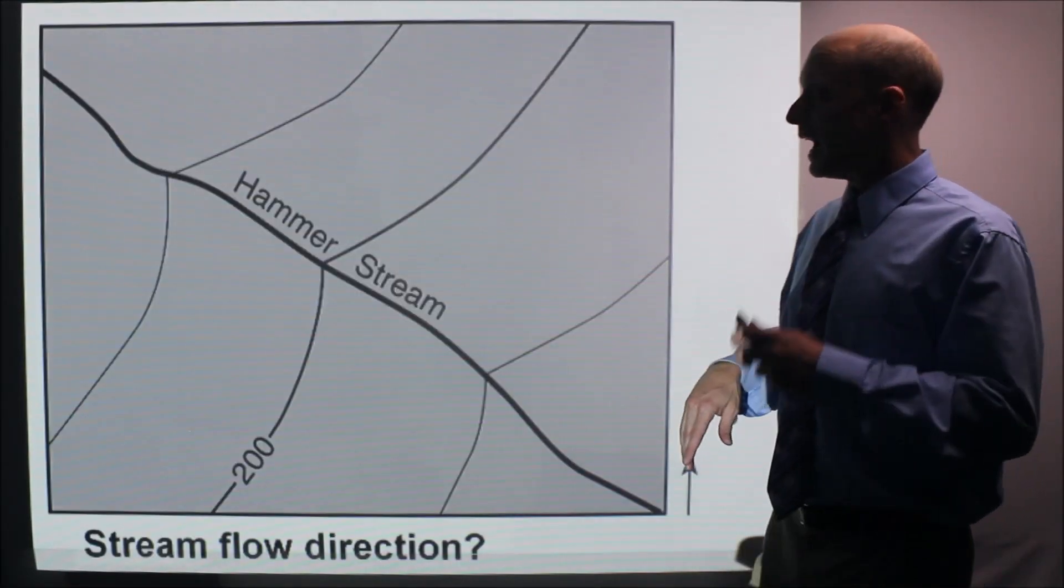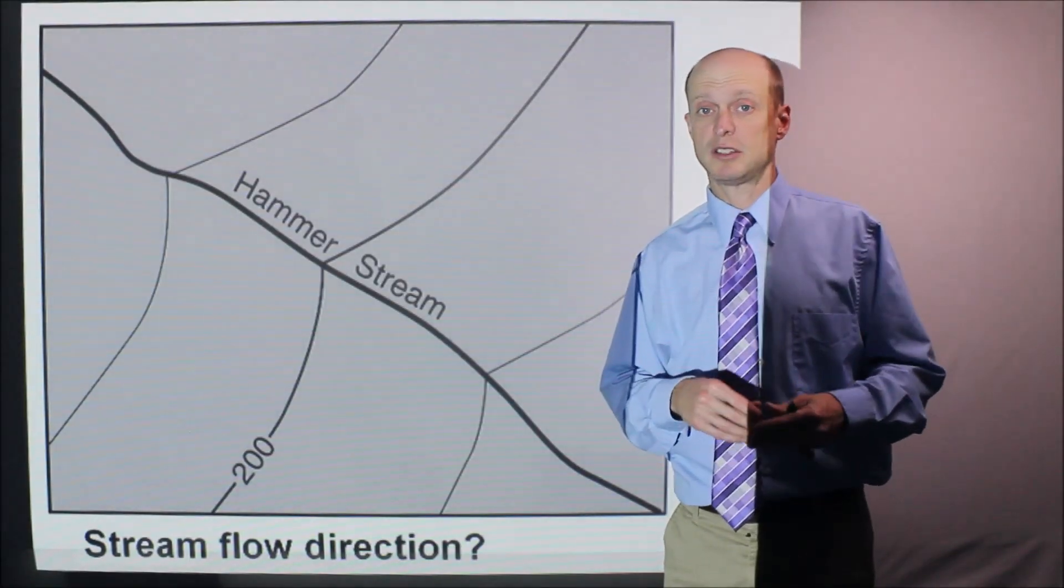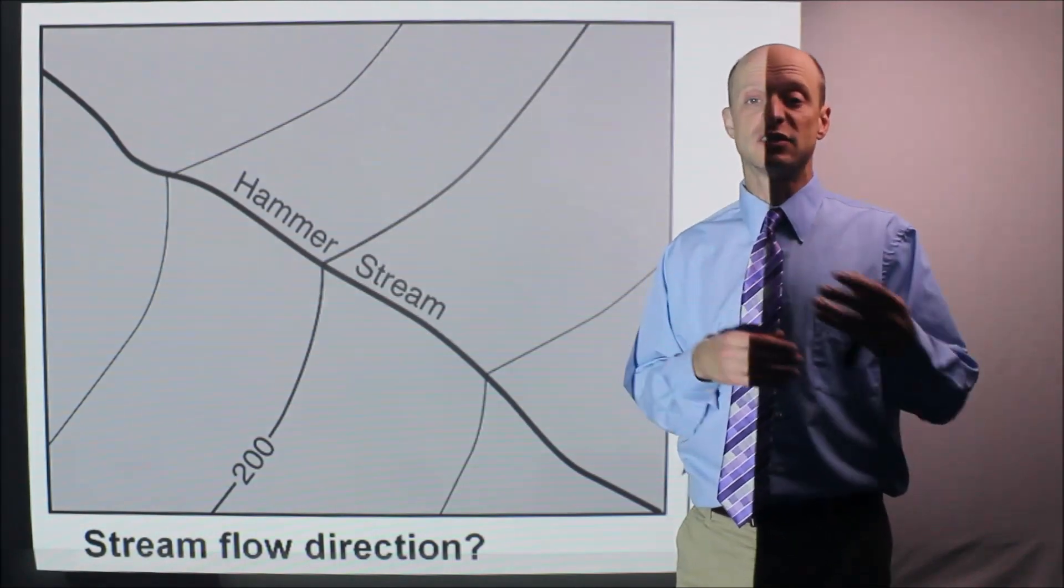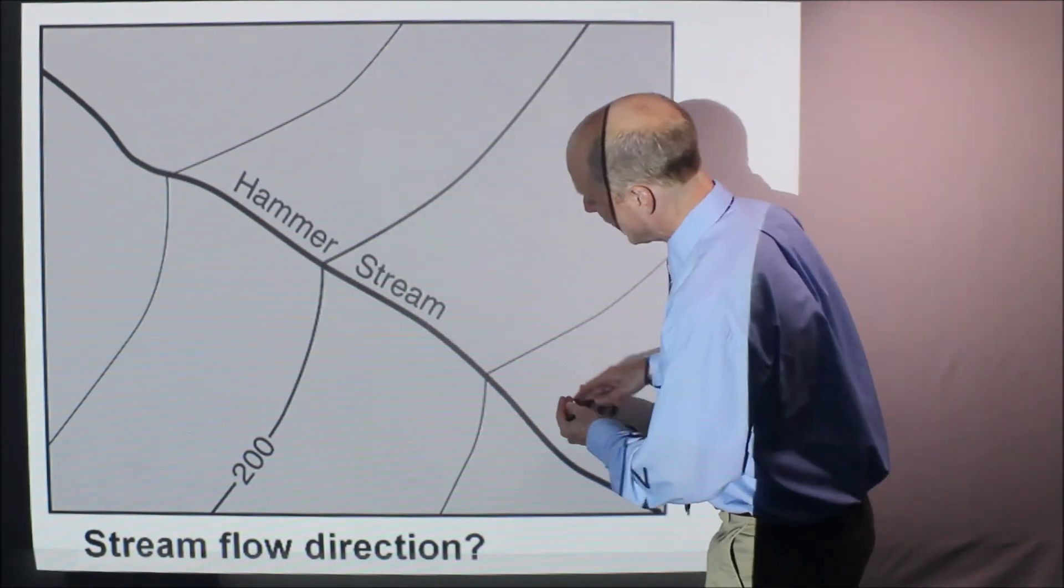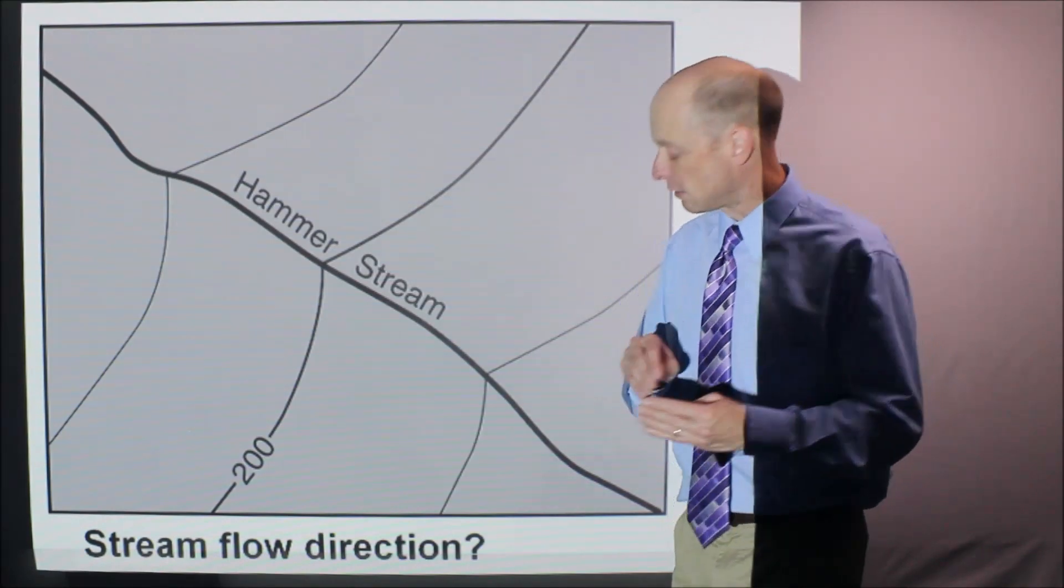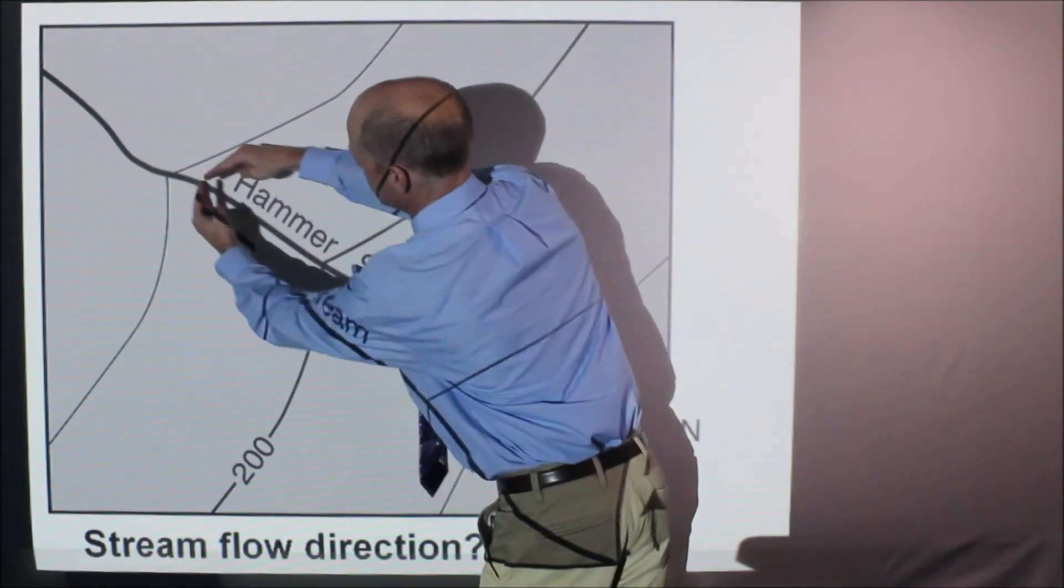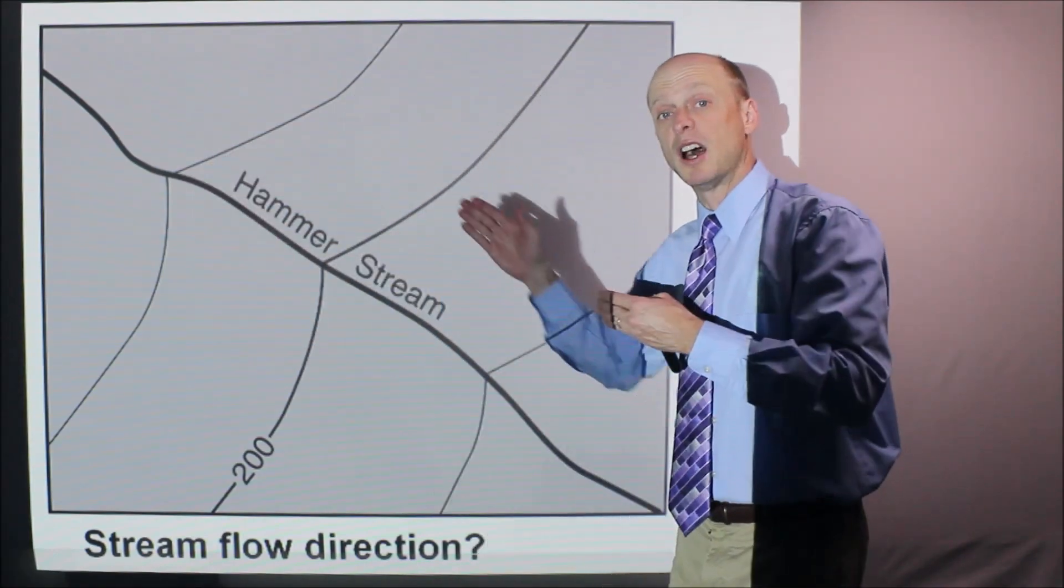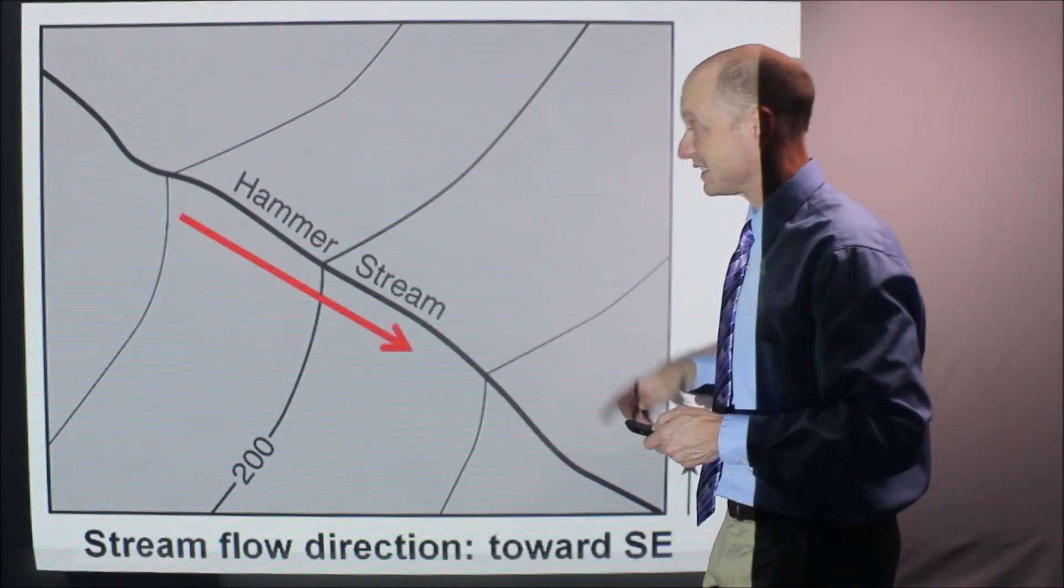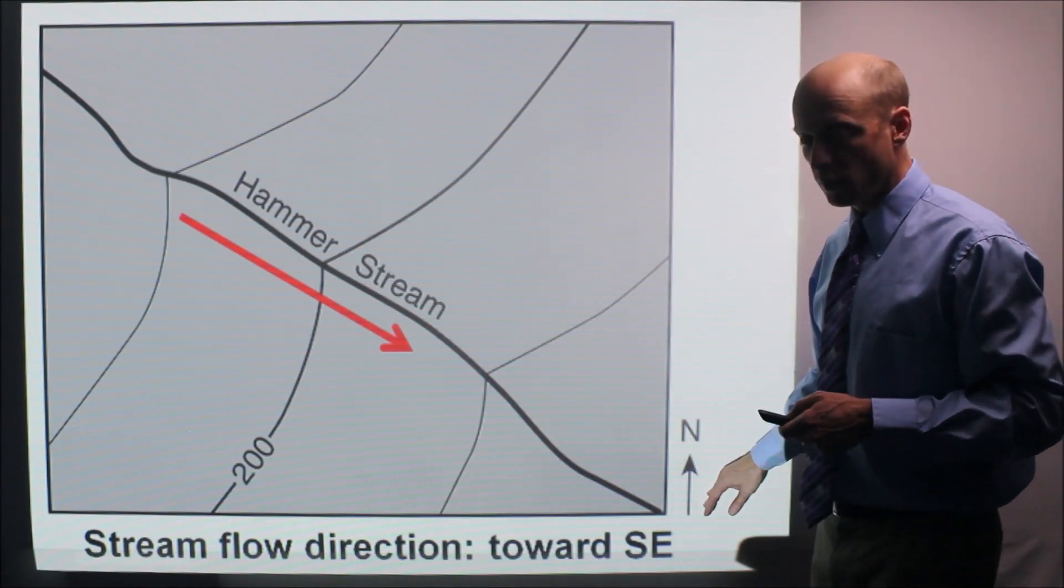Stream flow direction. How can you tell what direction does a stream flow? And they usually want a compass direction. Don't say downhill. They're going to say north, south, southeast, southwest, something such as that oftentimes. And it is, look at the shape the contour lines make where they cross the stream. You see how they kind of pointed here? We'll call that like a V shape is what we usually do. And that V points uphill or upstream so the river will flow the opposite way like this. That's the direction the stream flow. We'd say the stream here flows toward the southeast.